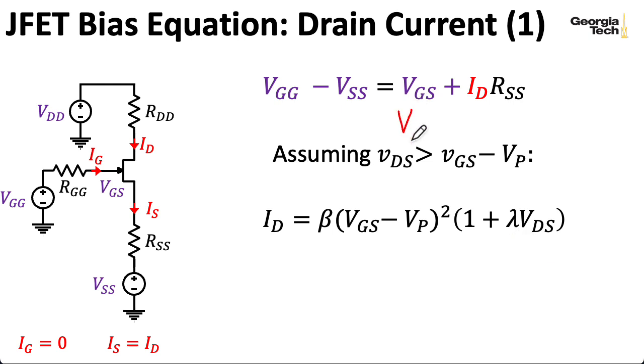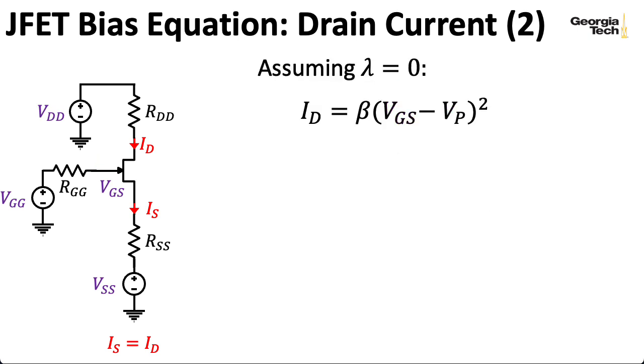Now remember that for BJTs, we generally assumed that the base emitter voltage was something like 0.65 or 0.7 volts. That's a convention that people sort of landed on because it gives you a nice current while also not blowing up your transistor. And you're able to get away with an approximation like that because the exponential characteristic of the BJT gives you such a steep slope. Here we have a square law. So the slope is not as steep and you can't get away with making a similar assumption for VGS. Neglecting channel length modulation is equivalent to neglecting the early effect in a BJT.